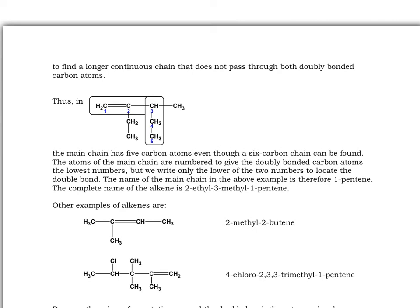Here is perhaps the most important part. Now in order to identify our parent chain, what we're going to find is a continuous chain. So we're looking for the longest continuous chain that has both double bonded carbon atoms. The longest carbon chain that has both double bonded carbon atoms is the one that's already been boxed out here.